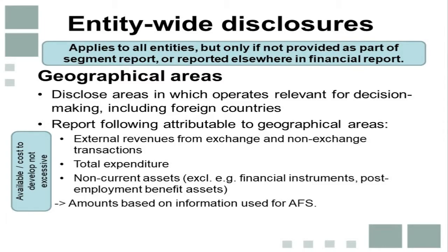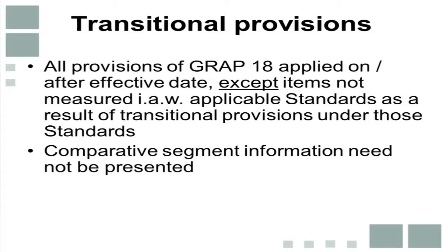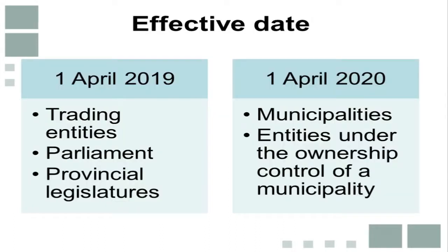The arrangements for first-time adoption are that all provisions of GRAP 18 must be applied on or after the effective date, except where items are not measured in accordance with standards of GRAP due to transitional provisions for that specific standard. Comparative information is not required for segment reports. The standard is effective on 1 April 2019 for trading entities, parliament and provincial legislatures, and effective on 1 April 2020 for municipalities and municipal entities.